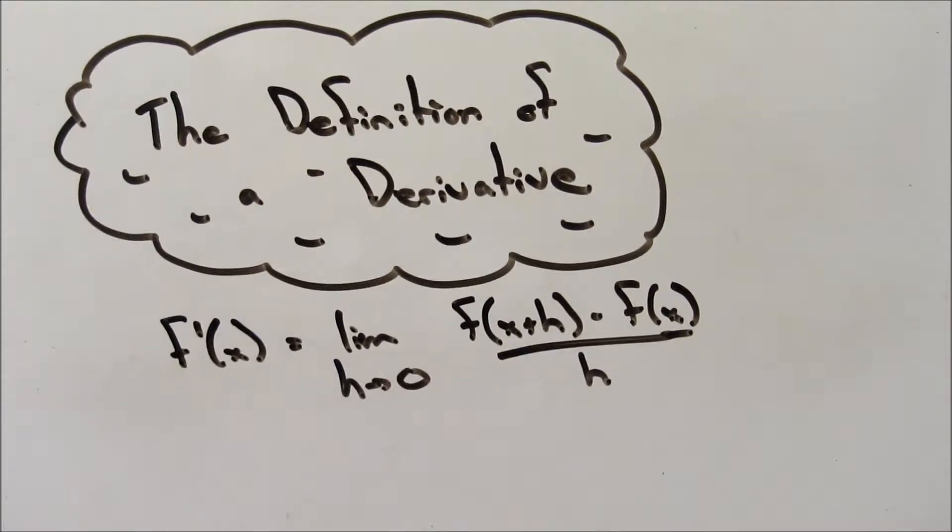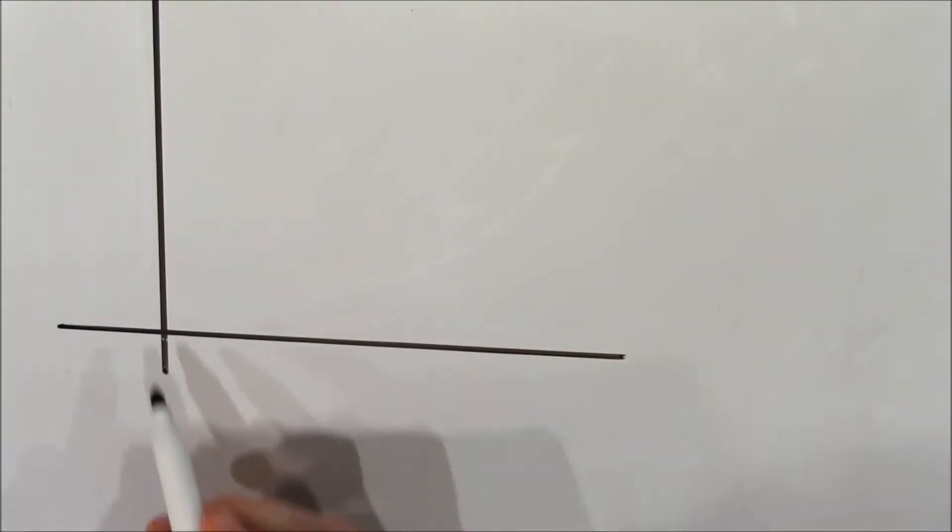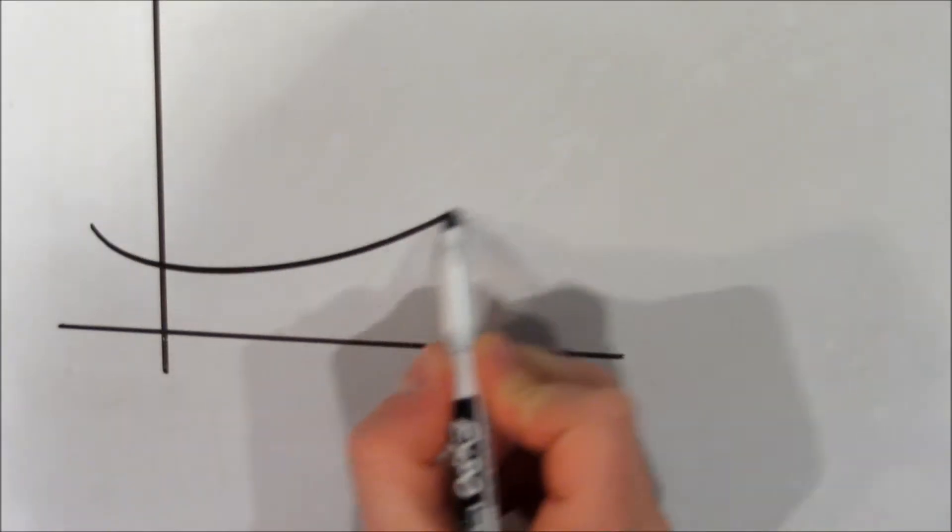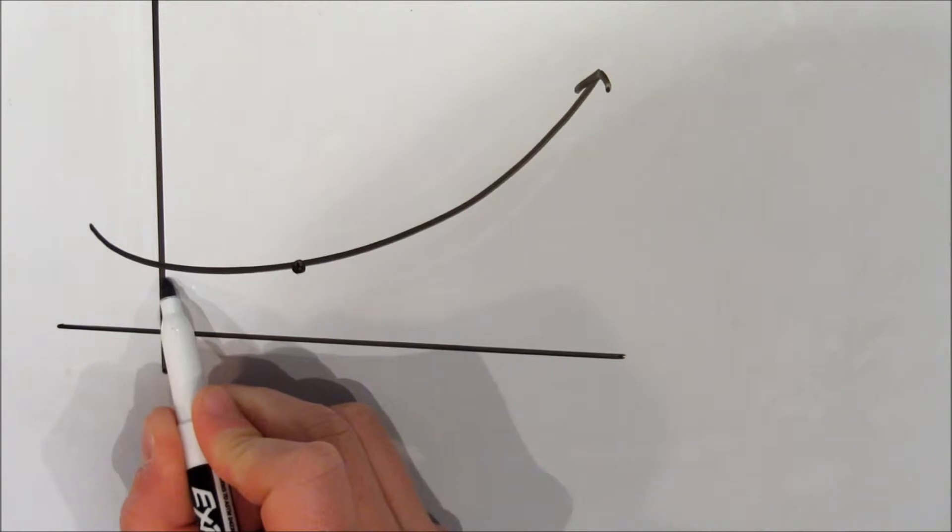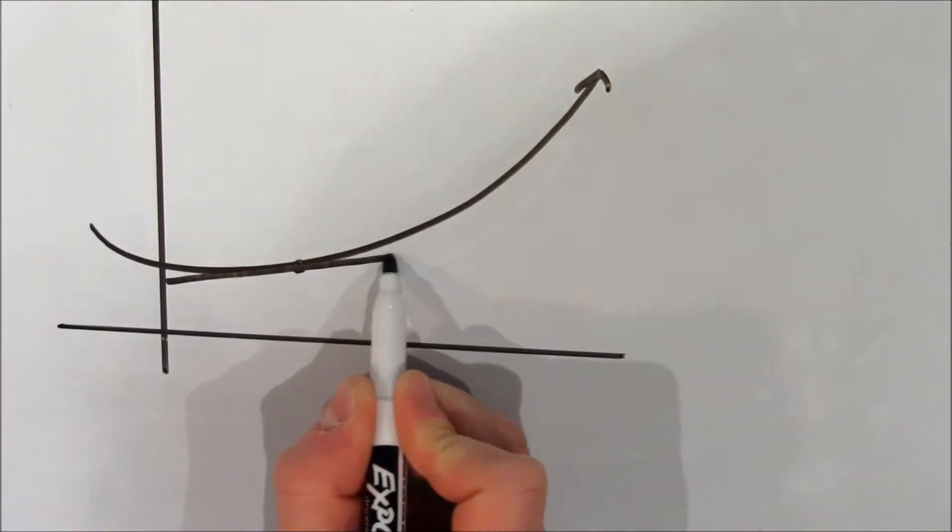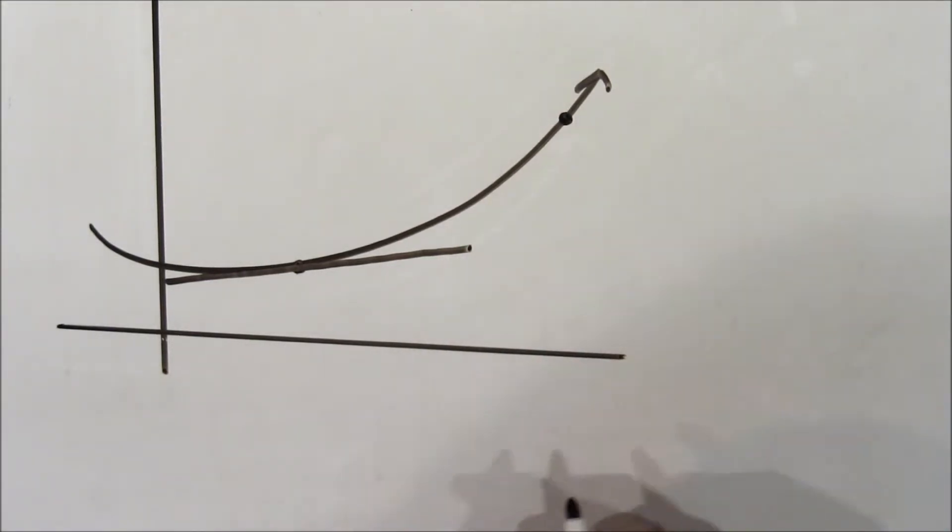Well, the derivative, in this case f prime of x, represents the slope of the tangent line at a specific x coordinate. So let's draw a function. We'll call it f of x. Now, let's pick a random point on this curve. How about this point? The tangent line of this point is a line that just touches this point on the curve, but no other point. But how do we find the slope of this line?